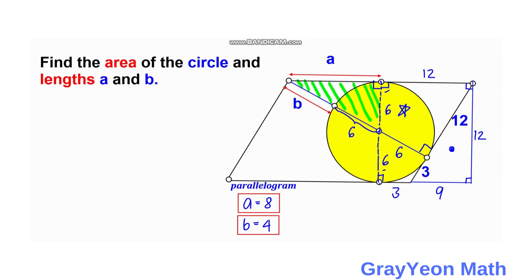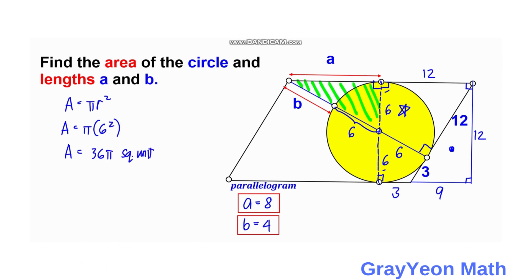Now that we have the radius equal to 6, we can find the area. Area equals π times the radius squared, and since the radius is 6, we have 6 squared, so the area equals 36π square units. This is our answer for the area.